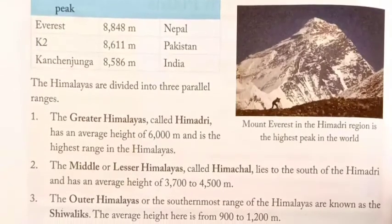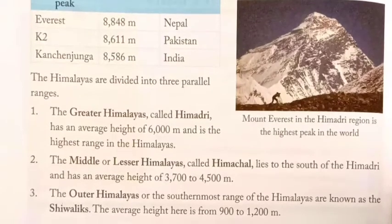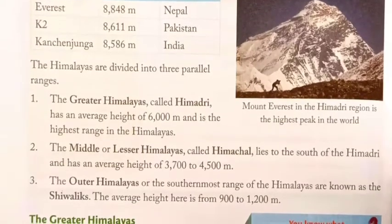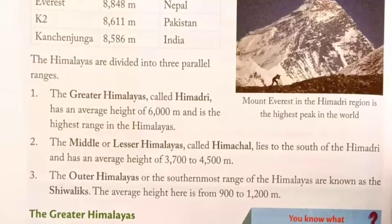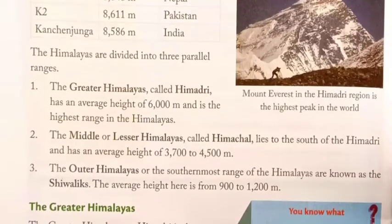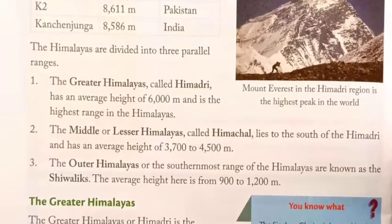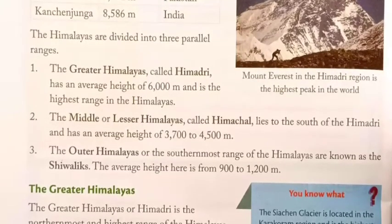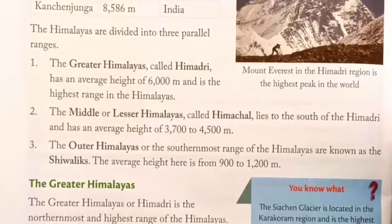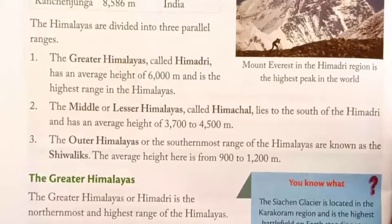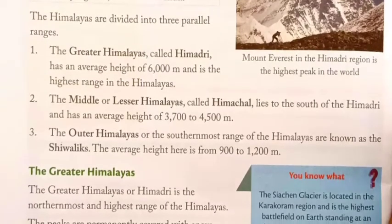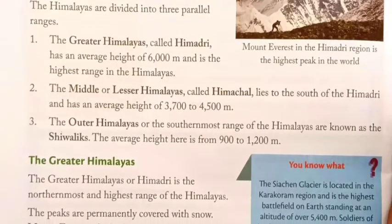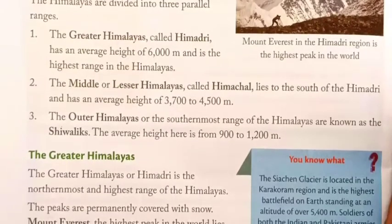Mount Everest in the Himadri region is the highest peak in the world. The Himalayas are divided into three parallel ranges. First, the Greater Himalayas called Himadri, with an average height of 6,000 m — the highest range. Second, the Middle or Lesser Himalayas called Himachal, lying to the south of Himadri with an average height of 3,700 to 4,500 m. Third, the Outer Himalayas or southernmost range known as the Shivaliks, with an average height of 900 to 1,200 m.